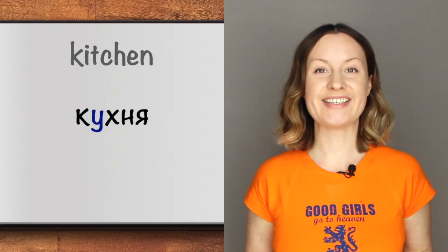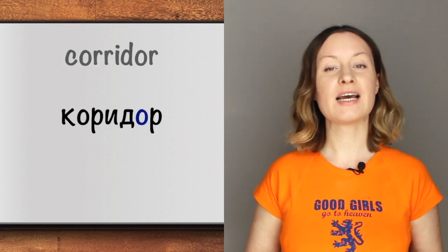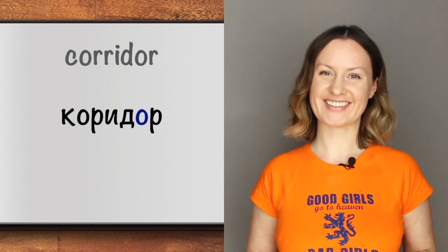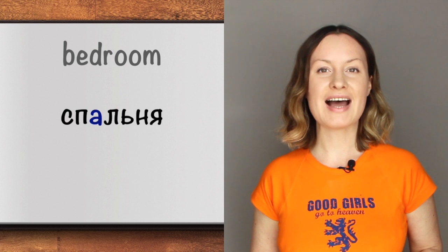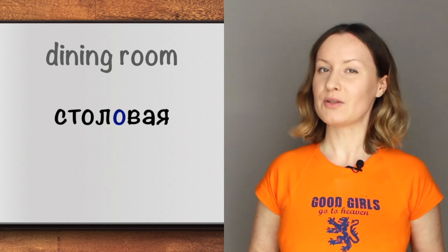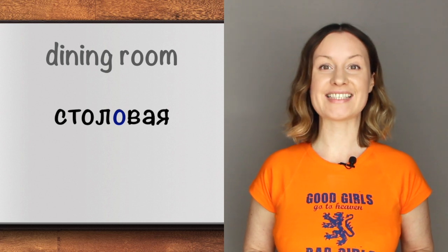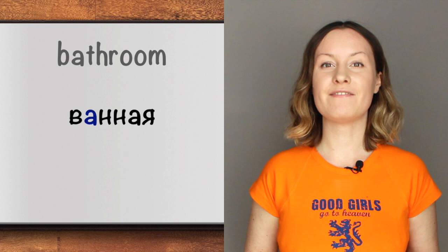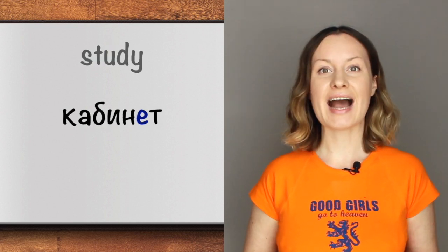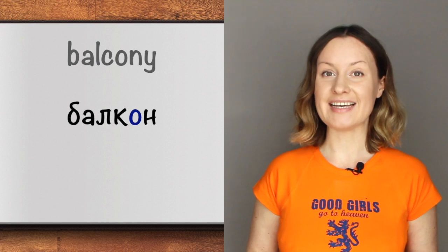Now let's learn how to indicate the rooms in the house. The kitchen is кухня. The hall or corridor is коридор — we write коридор but we pronounce коридор. The bedroom is спальня. The dining room is столовая — we write столовая but we pronounce столовая. The bathroom is ванная. The toilet is туалет. The study is кабинет. And the balcony is балкон.